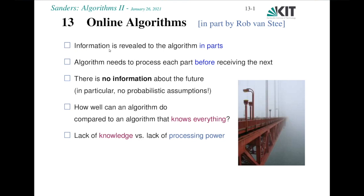Formally, we can say information is revealed to the algorithm piece by piece, but the decisions have to be made before the next piece of information is received. And now we have to think about how we can say that such an algorithm makes good decisions.